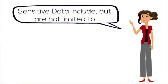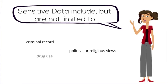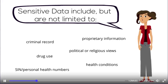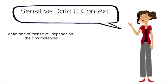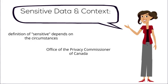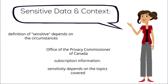Obvious examples include political or religious viewpoints, criminal record, history of drug use, social insurance or personal health numbers, information about health conditions, and/or proprietary business information. It's not always obvious, however, as seemingly harmless information may be sensitive in some contexts. The Office of the Privacy Commissioner of Canada notes that a list of the magazines a participant subscribes to could be sensitive data depending on the topic areas of those publications.